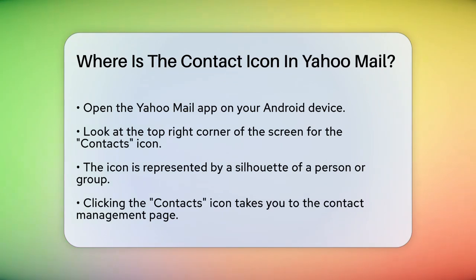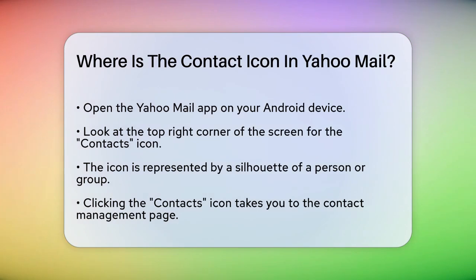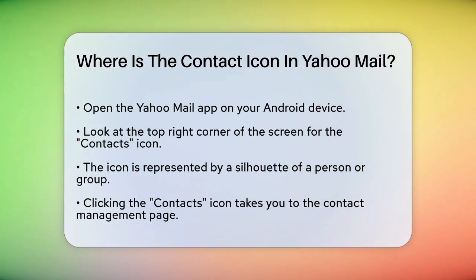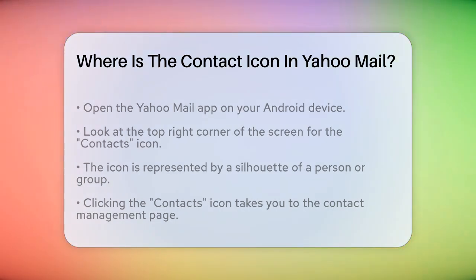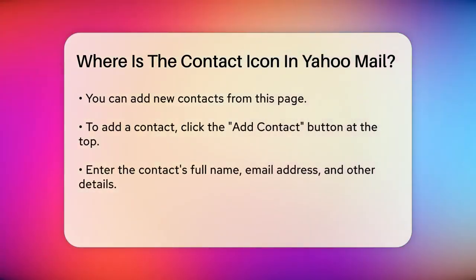First, make sure you have the Yahoo Mail app open on your Android device. Once you're in the app, look at the top right corner of the screen. That's where you'll find the contacts icon. It's usually represented by a silhouette of a person or a group of people, making it hard to miss.